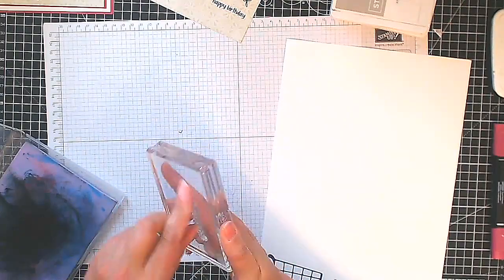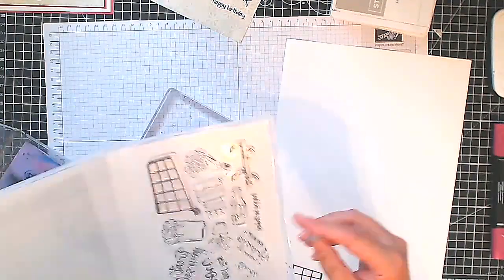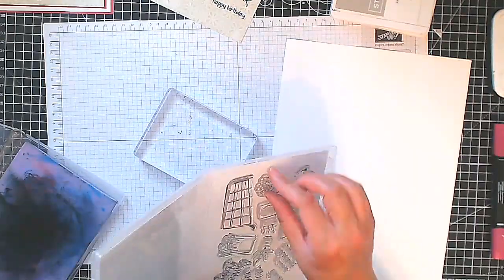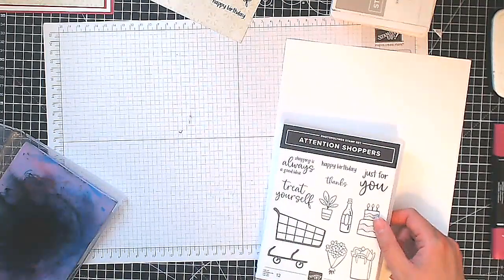I'm going to ink that up and stamp that in Misty Moonlight ink, stamping straight onto my designer series paper which is the Country Lace designer series paper. You'll find the measurements for that on the blog post on my website and you can find the link to that in the description box below.